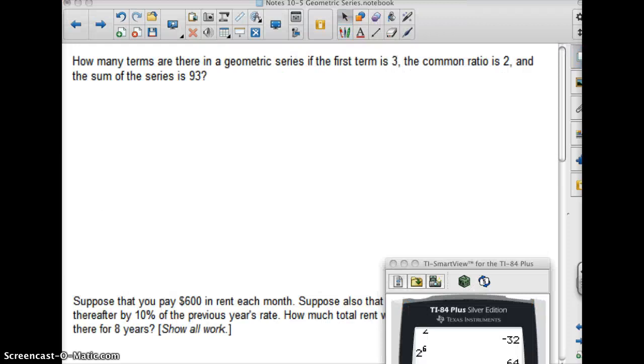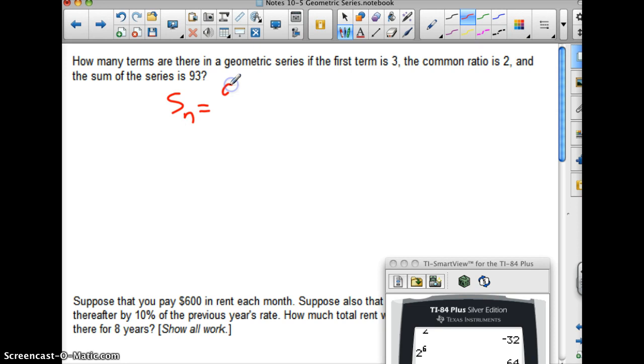Continuing. How many terms are there in a geometric series if the first term is 3, the common ratio is 2, and the sum of the series is 93? So this is, let's see, s sub n is a1 times 1 minus r to the n over 1 minus r. And s sub n, a1, r, n, these are the things that are going to be pertinent for the problem.